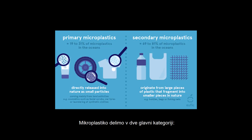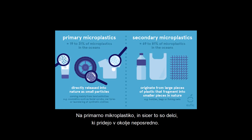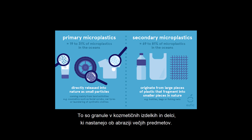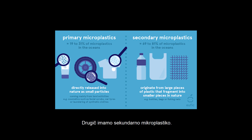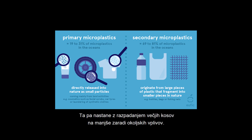We divide microplastic into two main categories. First, we have primary microplastic — these are the particles that come into the environment directly. They are the granules in cosmetic products and particles that are made during the abrasion of larger objects. Second, we have secondary microplastic, which is made with the decomposition of larger pieces into smaller ones because of environmental effects.